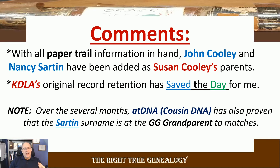I was able to take those records and, with this first-person statement along with all the other indirect records I have, I was able to say: I can add John Cooley and Nancy Sarton as the parents of Susan Cooley. Additionally, over several months, AncestryDNA cousin matches have proven that the Sarton surname falls at the great-great-grandparent level based on my mom's connection. Going to see original genealogy records at a state archives — looking not just at tax, census, and probate records, but at court cases including land disputes — you can find genealogically important information.